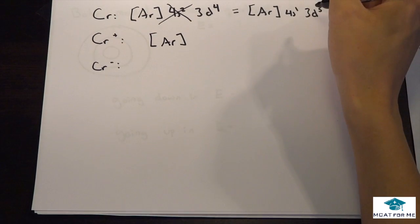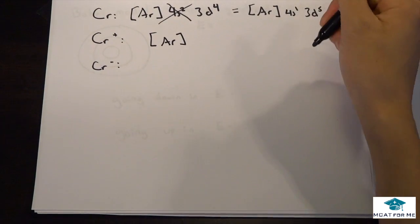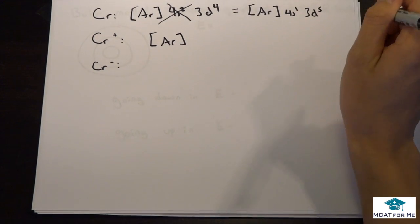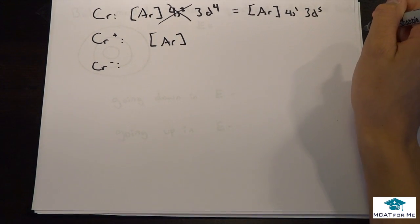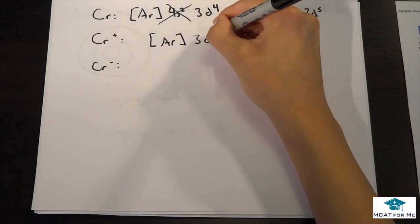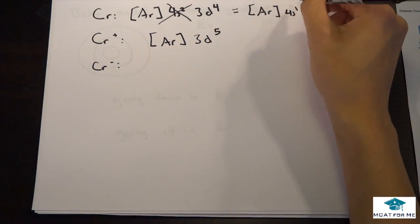Chromium plus means that we subtracted an electron, right? So where will we subtract the electron from? We said the rule was subtract from the highest energy level. Well, remember that this is a transition metal, so we want to take it off from the s before the d.